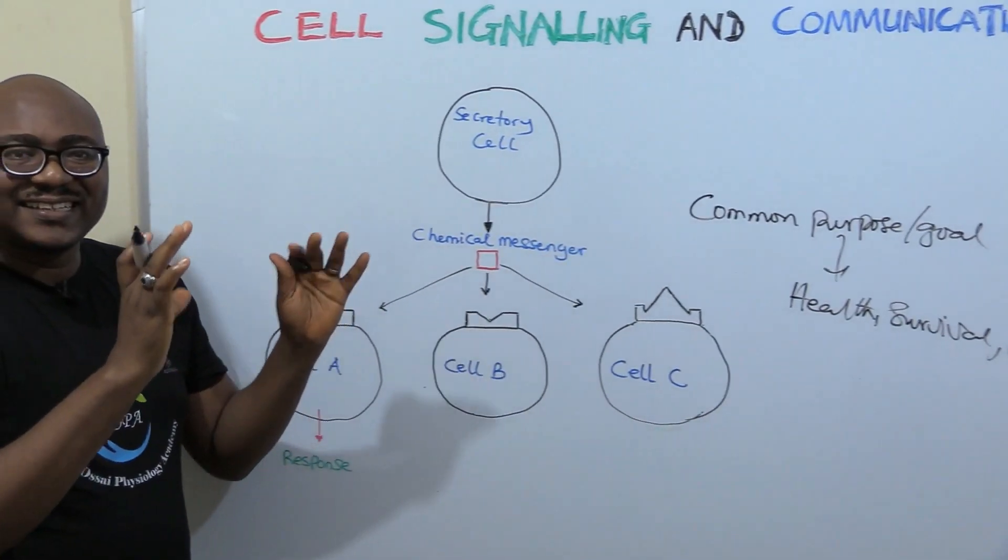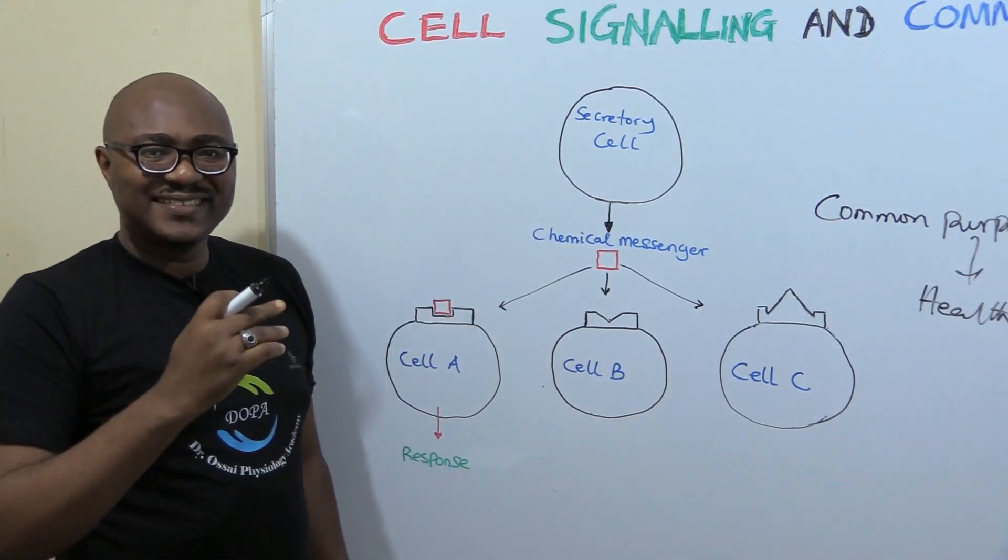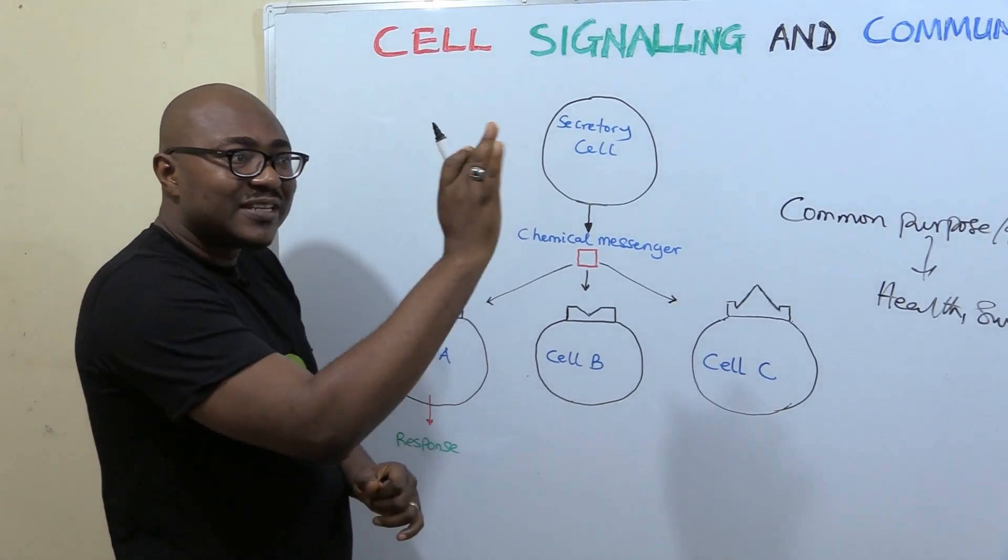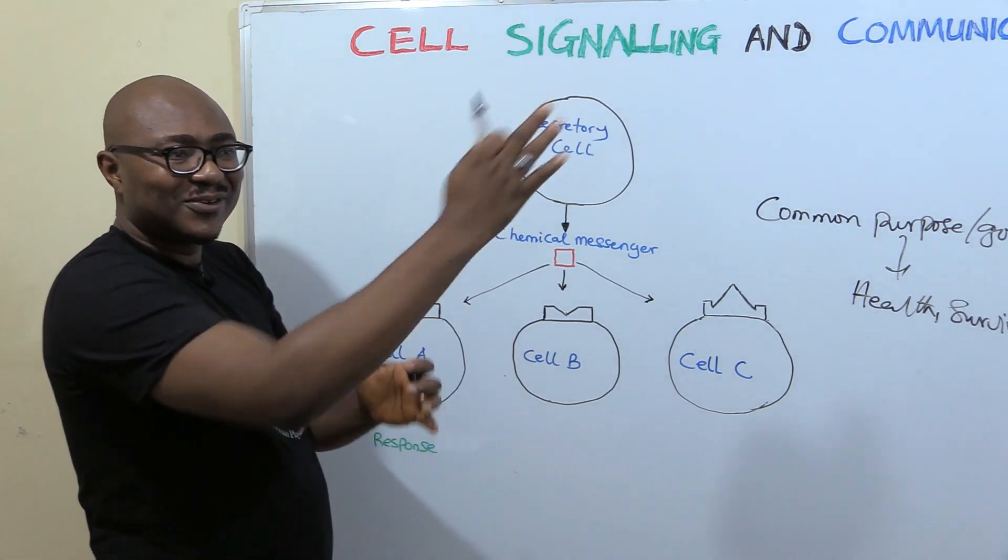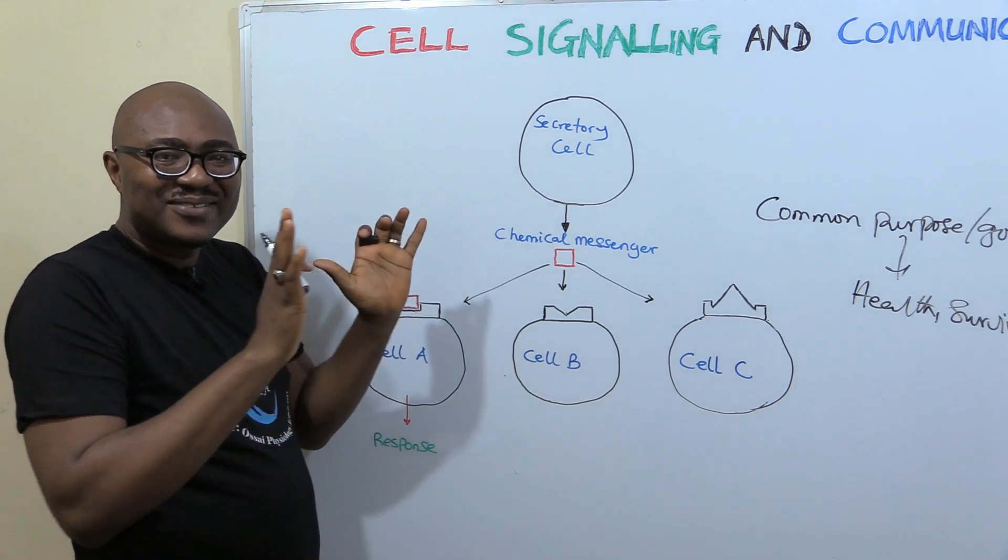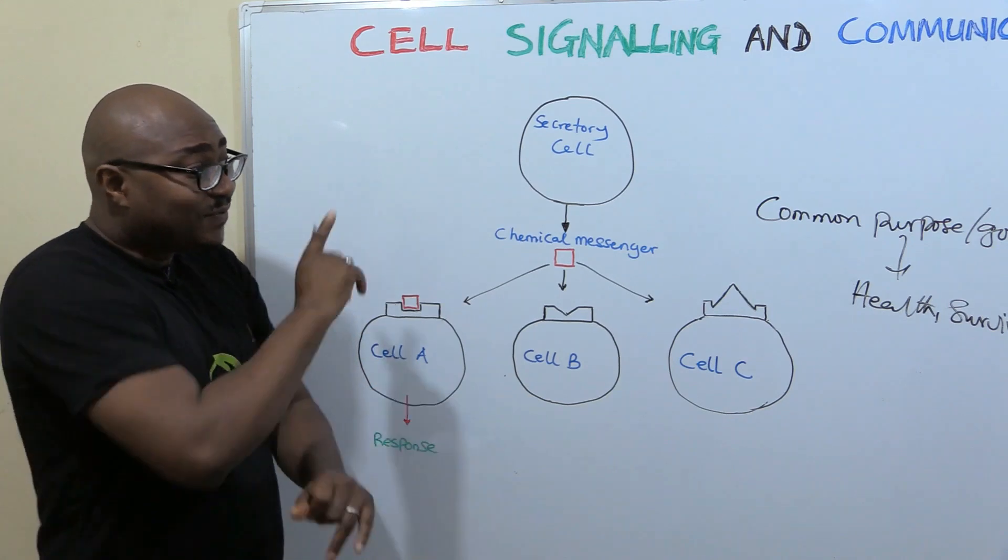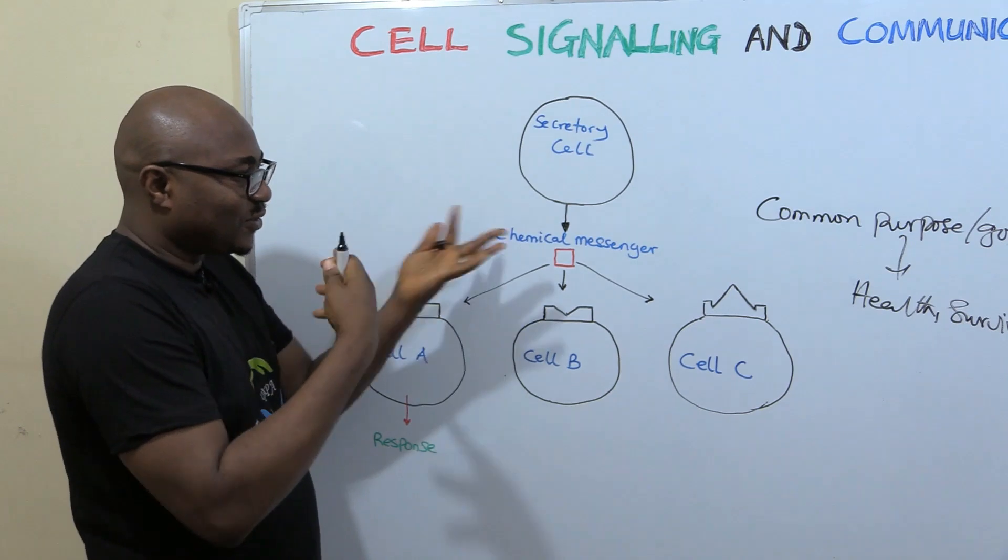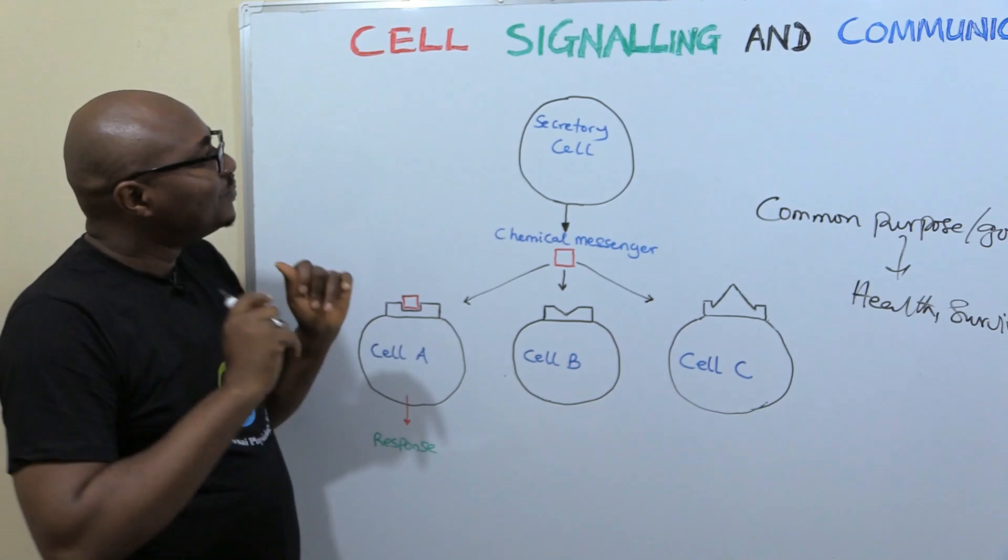But when you have people working together like that, they need what? To communicate. That's why you have a class of hundreds of people, students, but they all have similar pursuits. They all want to become doctors or nurses and so on. So they gather themselves and put themselves in one WhatsApp group for what? Information, dissemination, and communication. It's very vital. Without communication, nothing can happen. Nothing can happen in the cell. Physiological process cannot happen. So cells communicate. Let's establish that.